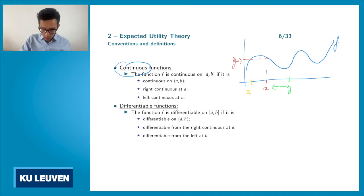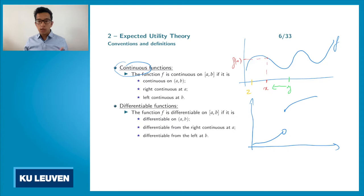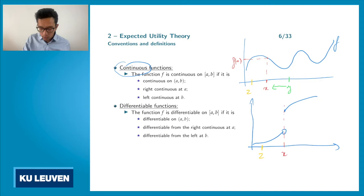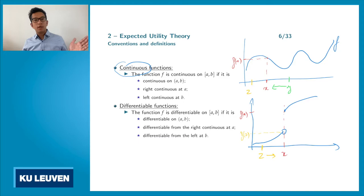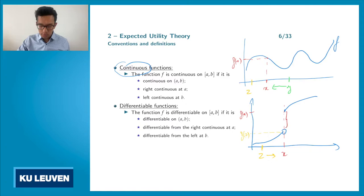Consider now the following function. This function is not a continuous function. If we take x here, and take a z here, and let z go towards x, then the function value f(z) will go to this value, whereas the function value at x is here. So we can never get z close enough to x such that f(z) gets very close to f(x) — in the limit it should equal f(x), but we have a jump here.